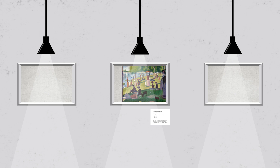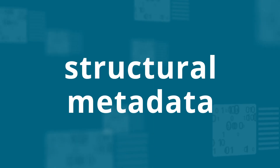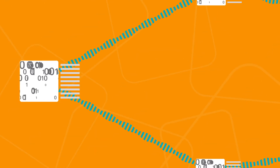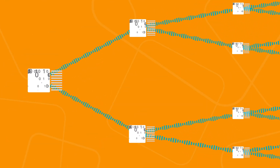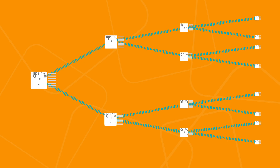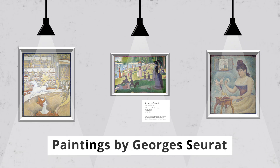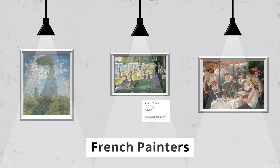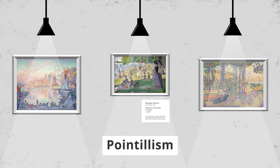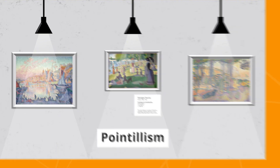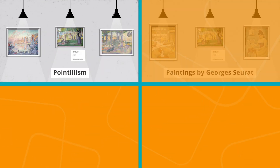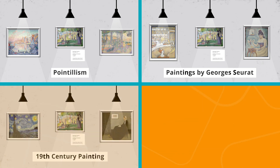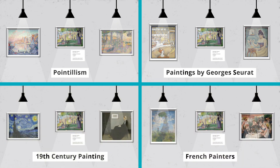But where in the gallery would you put this painting? That's where structural metadata comes in. Structural metadata is information about how an object should be categorized so that it fits into a larger system with other objects. Beyond the obvious, like other paintings by Seurat, we might add 19th century painting, French painting, or pointillism — the styles Seurat helped pioneer with this work. Structural metadata establishes a relationship with other files so that they can be organized and used in interesting new ways, like the way this painting can be used to tell different stories about art.